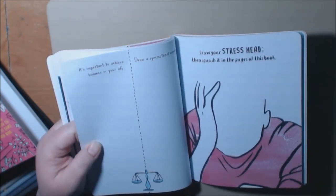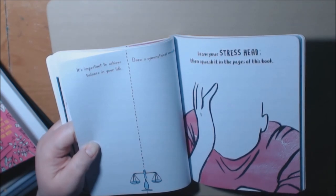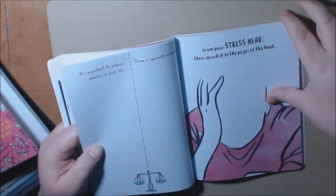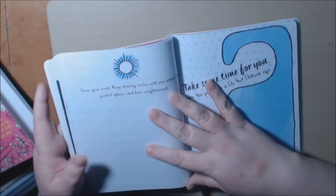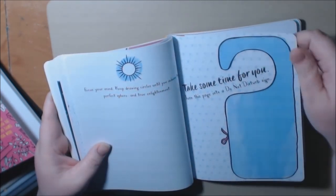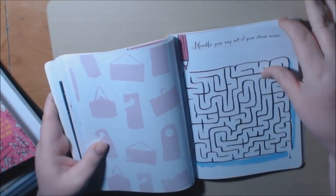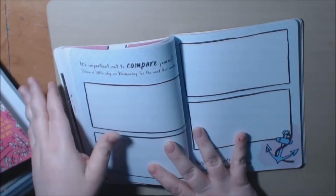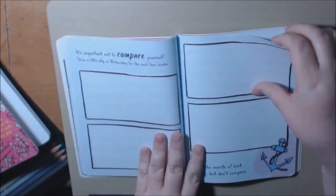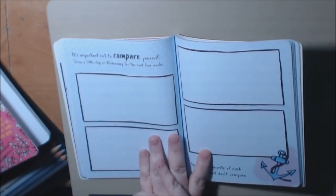Important to achieve balance in your life. Draw a symmetric noodle. Draw your stress head. Then squash it in the page of this book. Wow.